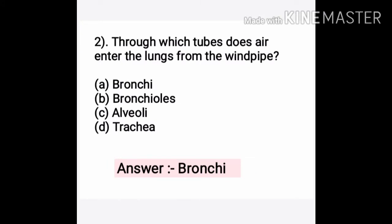Question number two: Through which tubes does air enter the lungs from the wind pipe? Options: A. Bronchi, B. Bronchiols, C. Alveoli, D. Trachea. The correct answer is A. Bronchi. The trachea further divides into bronchi, and after entering the lungs, bronchi divide into bronchioles, and then alveoli.